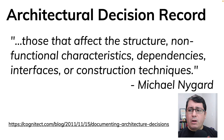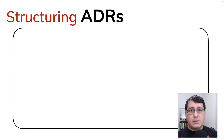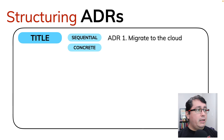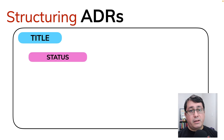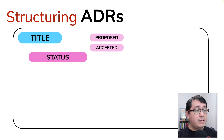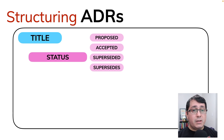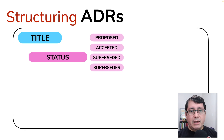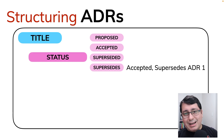So how can we structure those architecture decision records? Everything begins with a title. A title should be sequential and concrete — for example, ADR1: Migrate to the Cloud. Next comes the status. The status has four values: proposed when everything begins, accepted, and finally superseded or supersedes, which indicates that the current ADR was either replacing one that already exists or is being replaced by another one coming afterwards.